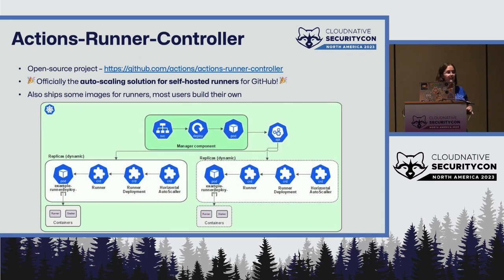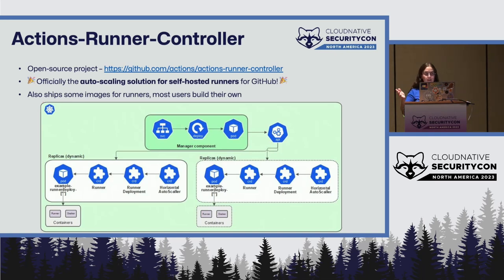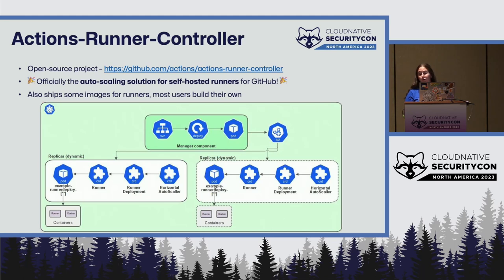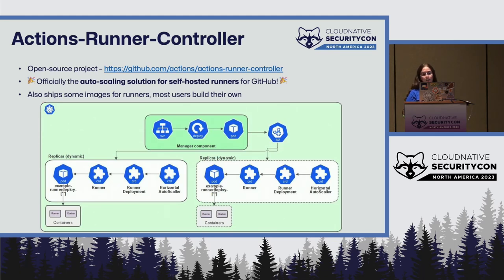There is a ton of work going on in this project right now. The architecture diagram shown reflects the current state of Actions Runner Controller, including the current CRDs. The exact CRDs and implementation are about to change — additional work will provide better scaling as a supported path. Auto-scaling is pull-driven over APIs; in the current implementation that's a very short poll interval, while the newer implementation will have a longer poll interval on new APIs. All of this — new CRDs, architecture diagrams — is documented in the repository, and we are collaborating completely in the open.